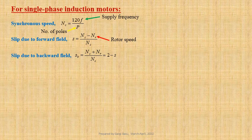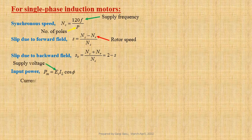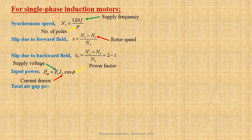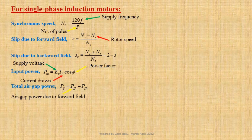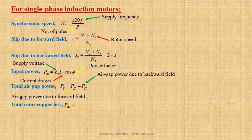For single phase induction motors, input power Pin equals to Et into Il cos of phi, where Et is the supply voltage, Il is the line current drawn from the supply and cos phi is the power factor. Total air gap power Pg equals to PgF minus Pgb, where PgF is the air gap power due to the forward field and Pgb is the air gap power delivered to the rotor due to backward field. Total rotor copper loss P_copper equals to S times PgF plus Sb times Pgb, that is equal to S times PgF plus 2 minus S times Pgb.